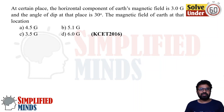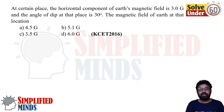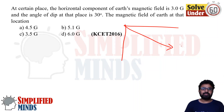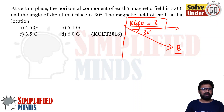Let's go to the next question. At a certain place, the horizontal component of the Earth's magnetic field is 3. The angle of dip at this place is 30 degrees. Find the total magnetic field of the Earth at that location. They are given the horizontal component and the dip angle, and are asking for the total field B.